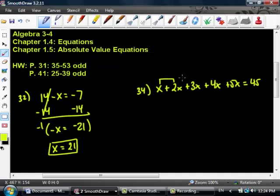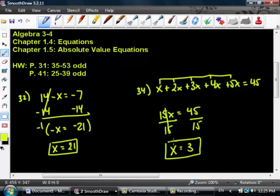Add them all, right? Combine like terms. 1 plus 2 plus 3 plus 4 plus 5. Anybody know the answer to that riddle? Evan? 15. You have 15 x's. Evan's already been accepted into the college of his choice, by the way. 15x equals 45. Divide by 15 on both sides. What's x equal? Brian? 3. Boom.